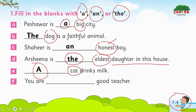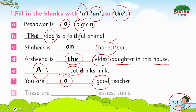'You are a good teacher' — 'a' is used because 'good' starts with a consonant sound. 'These are the easiest sums' — 'the' is used because 'easiest' is a third degree adjective.